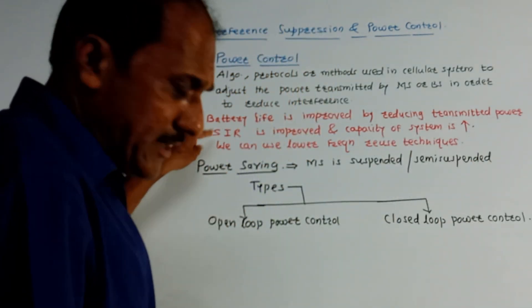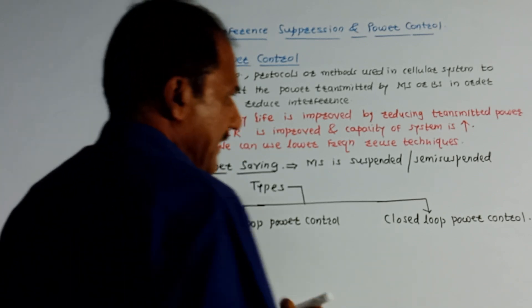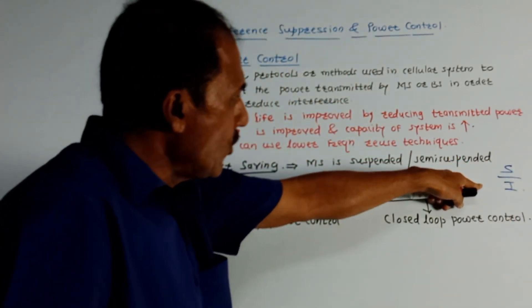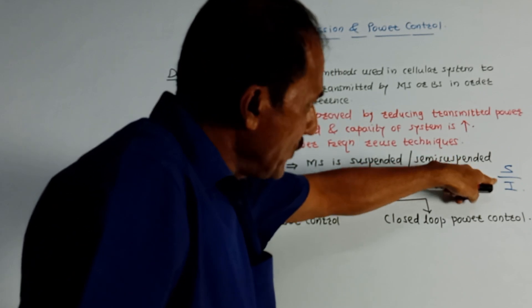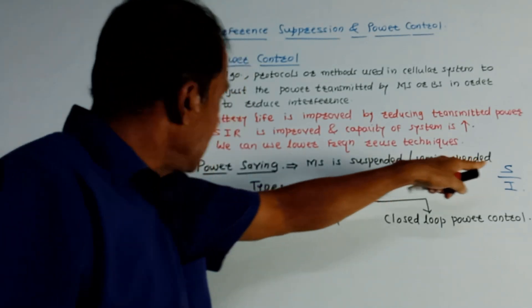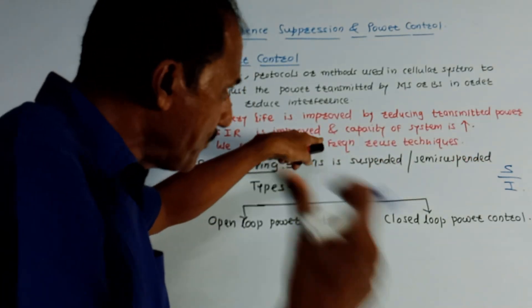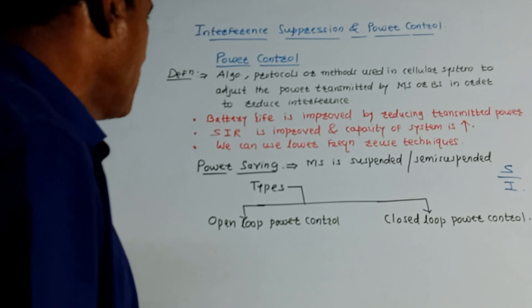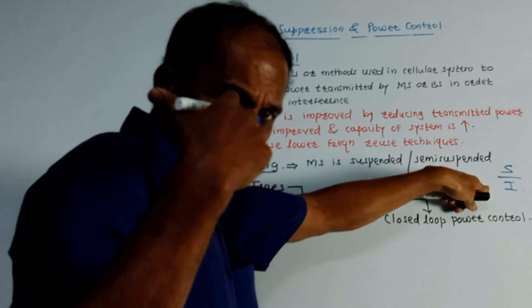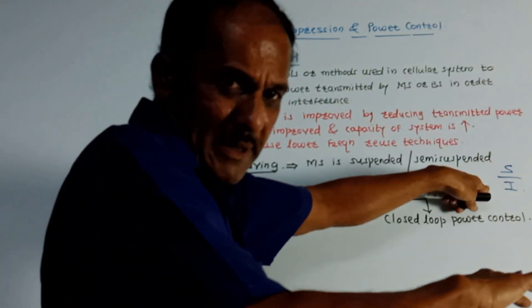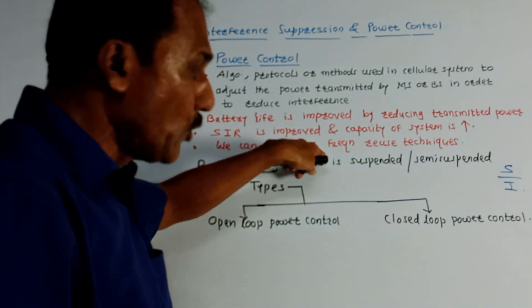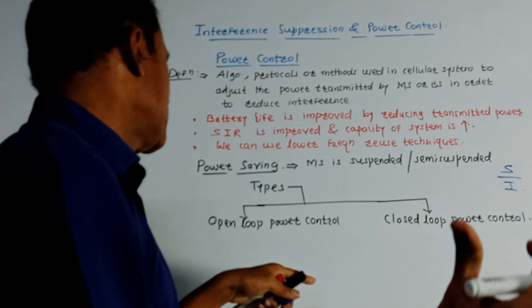There is a term called SIR — Signal to Interference Ratio (S/I ratio). If you adjust the transmitted power, the SIR is improved and naturally the capacity of the system is improved. By improving the S/I ratio using this power control method, we can also make use of lower frequencies for frequency reuse techniques.